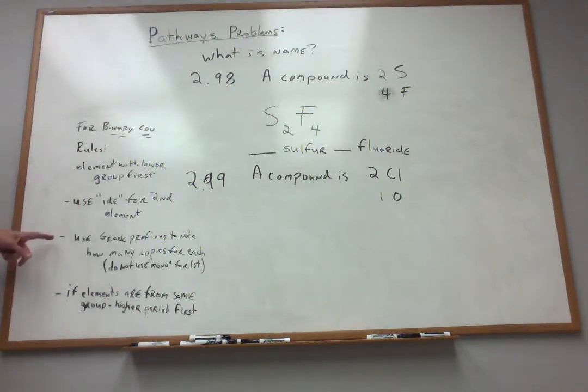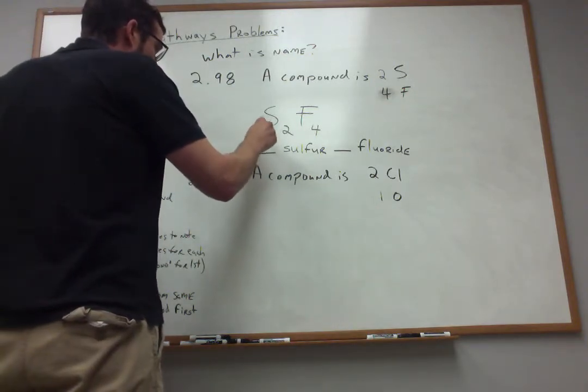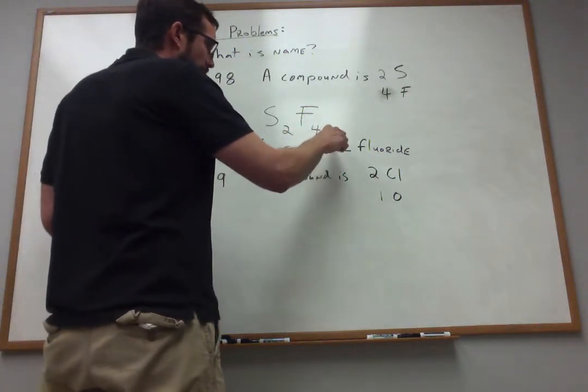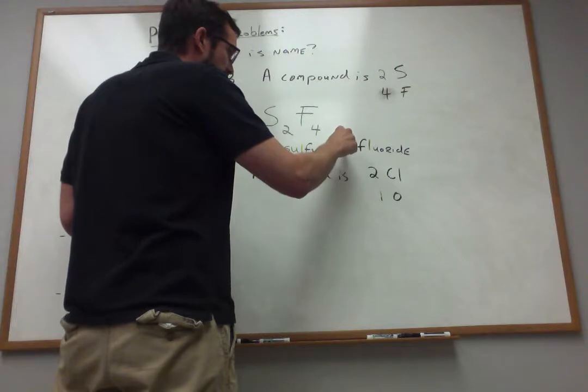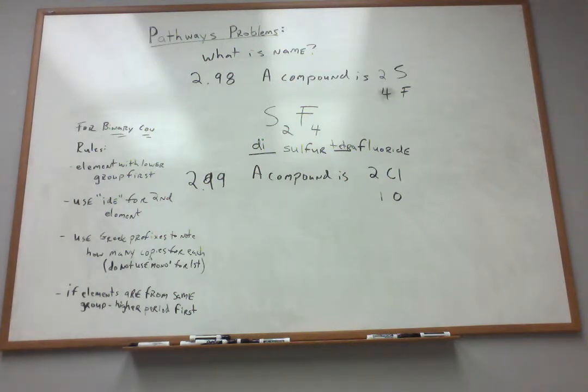I need to specify how many copies of each are present in my molecule using those numerical prefixes like mono, di, and so on and so forth. So I look at this compound. I'm going to say, well, I got two copies of sulfur. Maybe I should call it disulfur, four copies of the fluorine. The prefix for that is T-E-T-R-A, tetra. So disulfur tetrafluoride would be what I could call this compound. Again, element with lower group number goes first. All right, so that's problem 2.98.